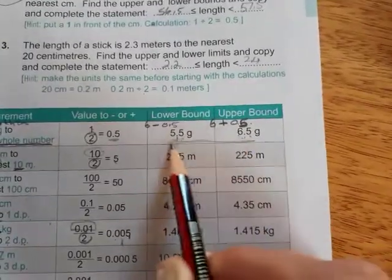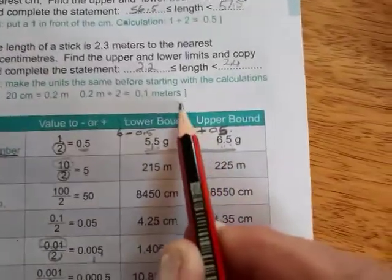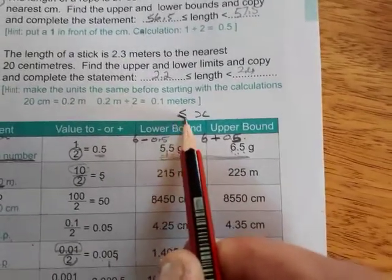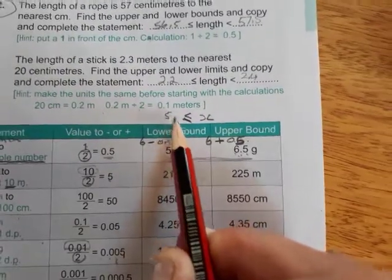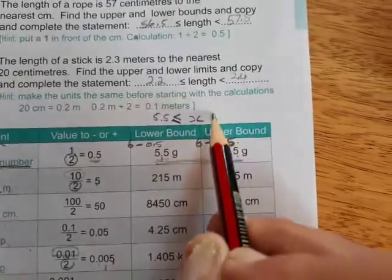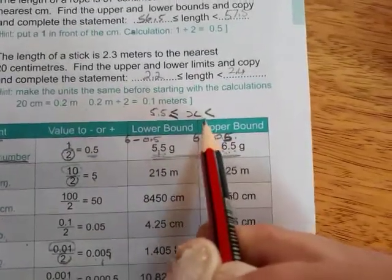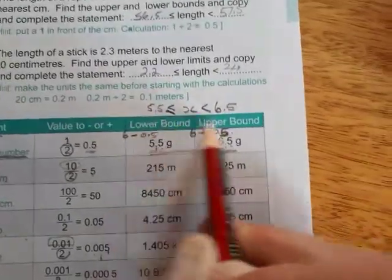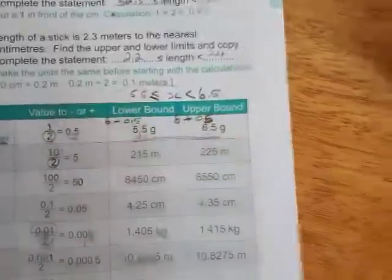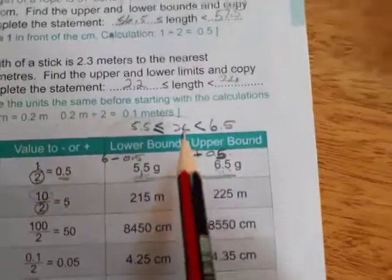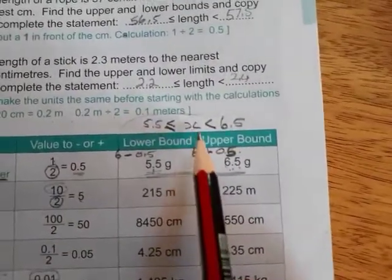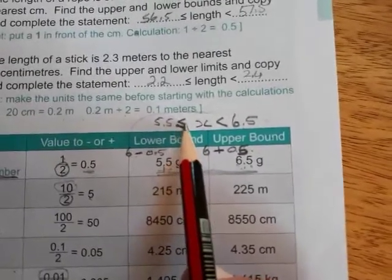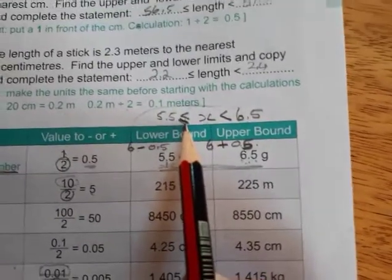So how would we write this as an inequality? You would say that X is greater or equal to 5.5, but it is less and no equal to 6.5. And that's your inequality. And it's always like that. On that side, you always have greater or equal.